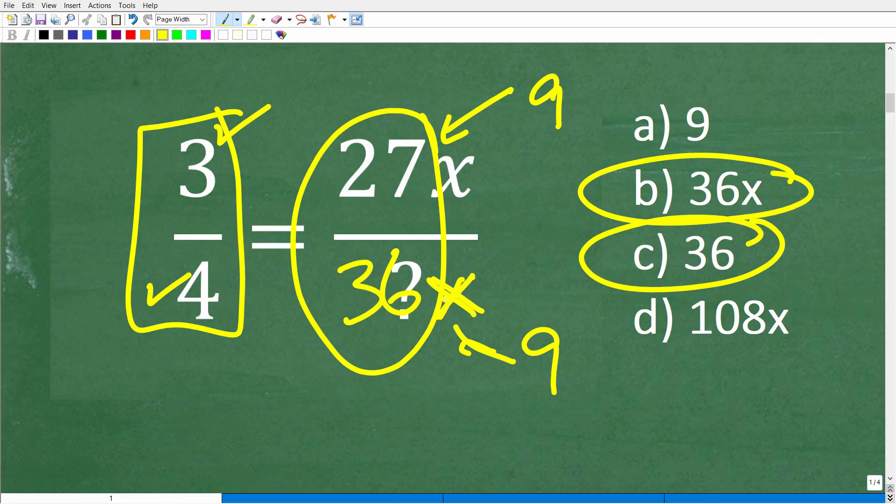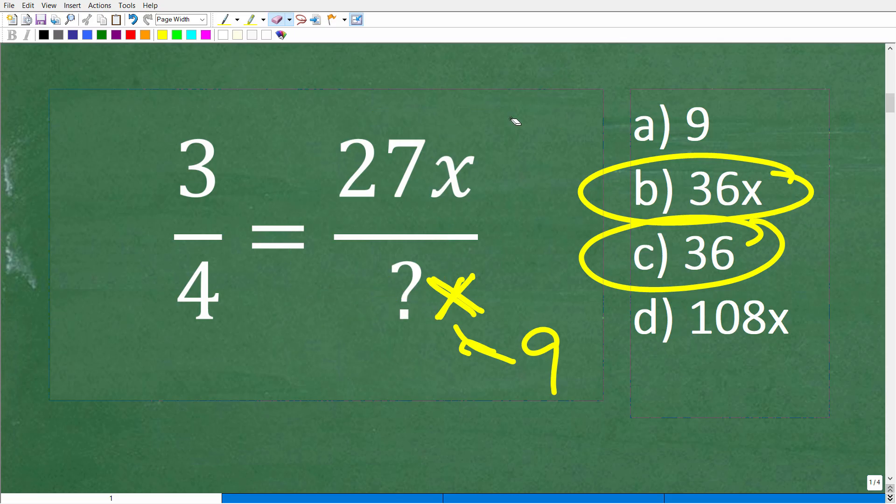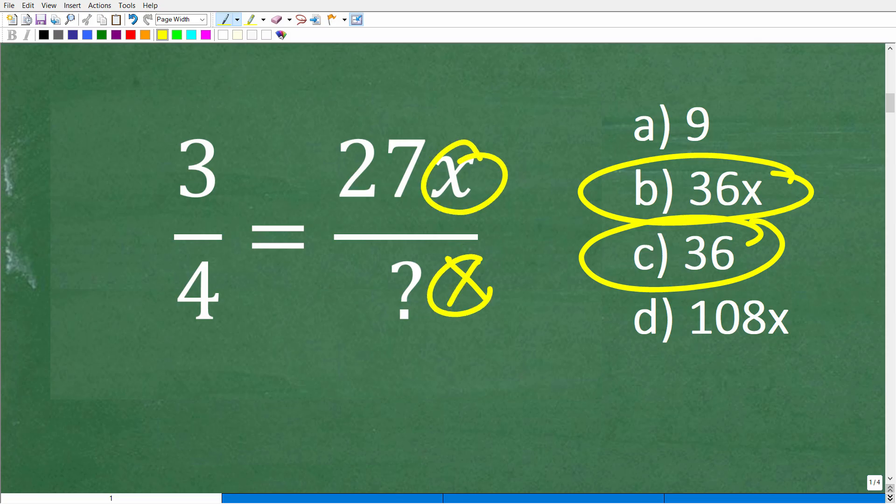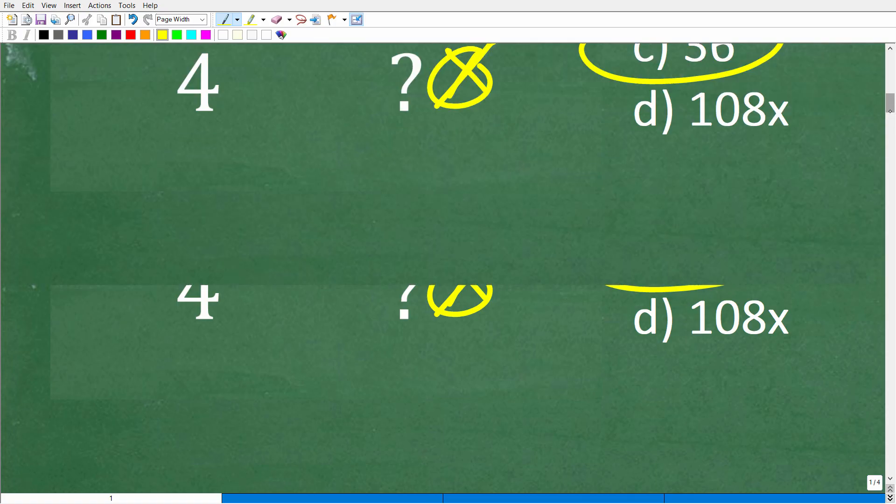Why do we need an x down here? Because on this fraction, there's no x in the numerator or denominator, so we have to get rid of the x. If you divide an x by an x, anything divided by itself is one, so these factors can cross-cancel. That's why the correct answer is 36x.